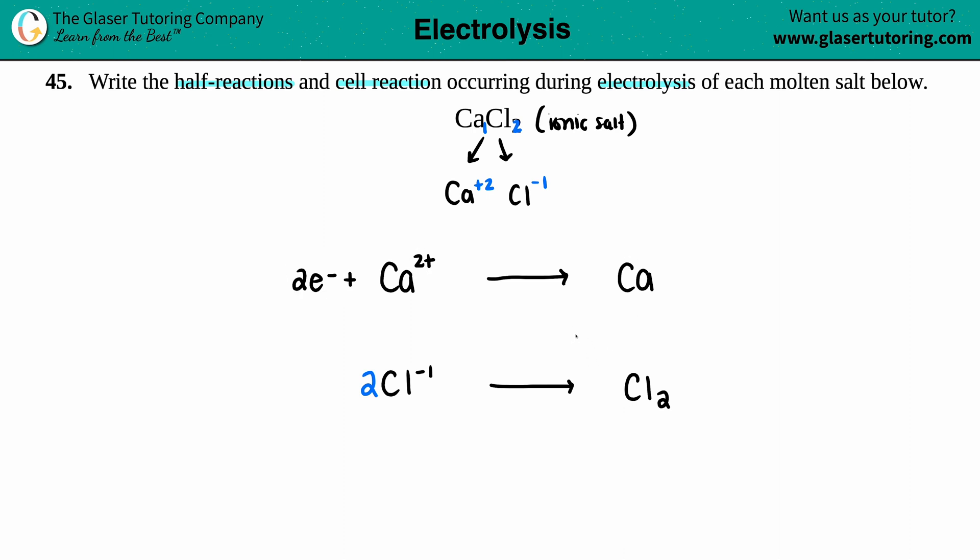And now on this side, it should match up as well. Over here, I have an overall charge of a negative two. And on this side, I have a zero charge. I'm going to have to add electrons on this side to get it down to a negative two. And I'll add two electrons.